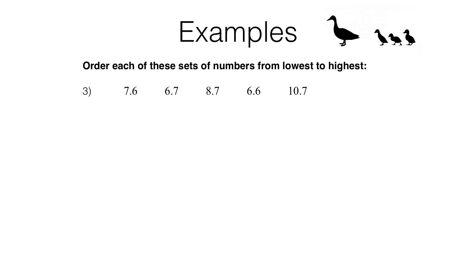In question 3 we've again got a load of numbers. We look at the biggest place value column first of all. For most of these numbers the units column is the biggest place value column, but here we've got a number where we get into the tens place value column. So that number we can put straight away on the end — that's going to be our biggest number. Looking at what's left we've got some numbers with a 7, some with a 6 and some with an 8 in the units column, so the smallest one is going to be one of the ones with a 6.